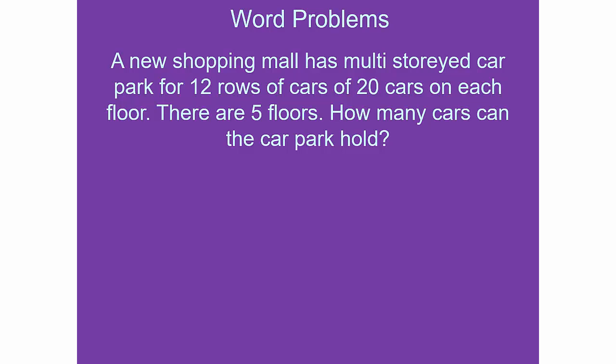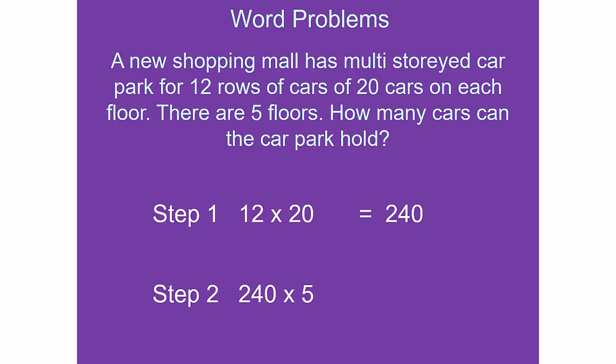A shopping mall has a multi-story car park with 12 rows of cars and 20 cars per row, on 5 floors. How many cars can the car park hold? Step 1: 12 times 20 gives 240. Step 2: 240 times 5.